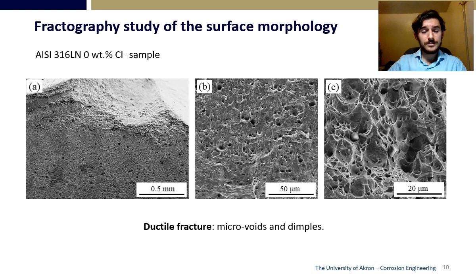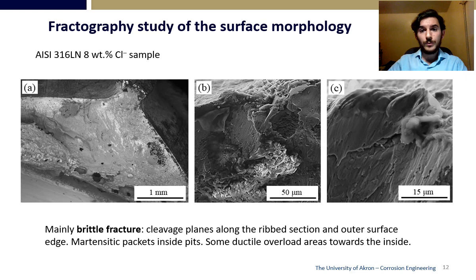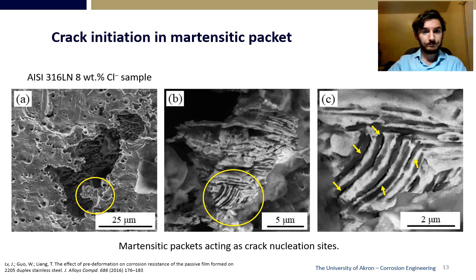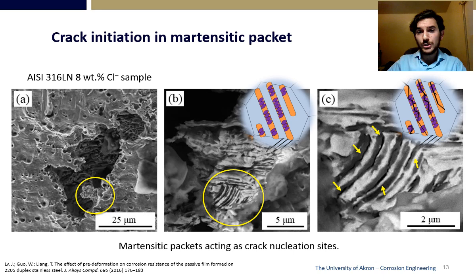After the SCC tests were done, the three samples were studied by SEM. First, the 0% chloride sample showed a ductile fracture with microvoids and dimples. Once 4% chloride was added, a mixed fracture was seen, with smaller microvoids and dimples with the formation of semi-cleavage facets. Finally, the 8% chloride sample had a brittle fracture, with large, well-defined cleavage planes around the edge of the sample, concentrated mainly in the rib section. Inside the pits and after light etching, the microstructure was revealed, showing the formation of martensite packets due to straining of the sample. From the higher-magnification image, it could be seen that the cracks only propagated through the martensite, not the austenite.